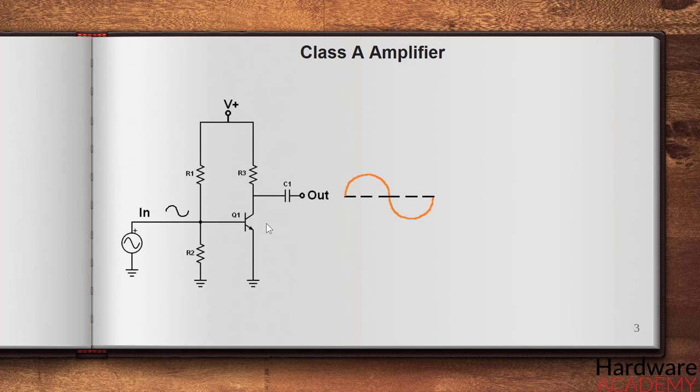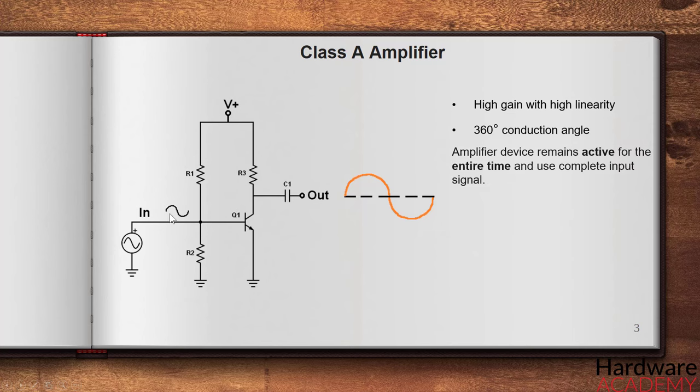Class A amplifier is a high gain amplifier with high linearity. In case of class A amplifier the conduction angle is 360 degrees. A 360 degree conduction angle means that the amplifier device remains active for the entire time and uses the complete input signal.